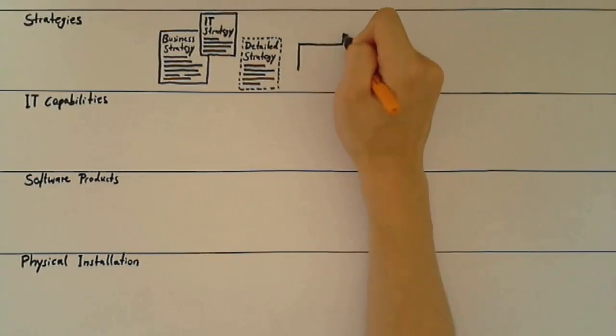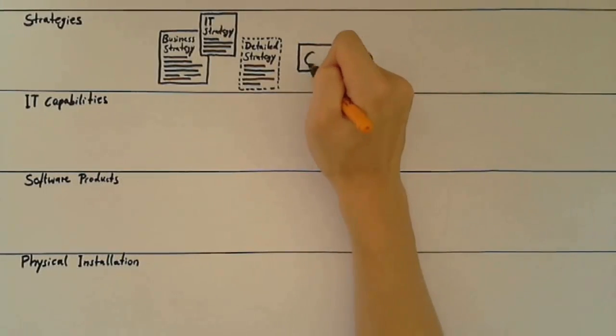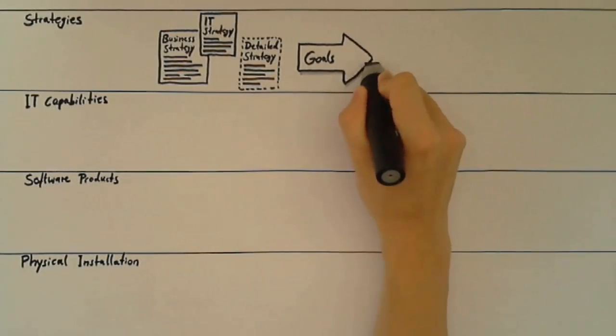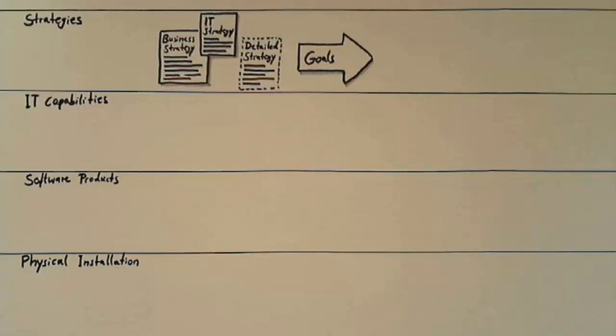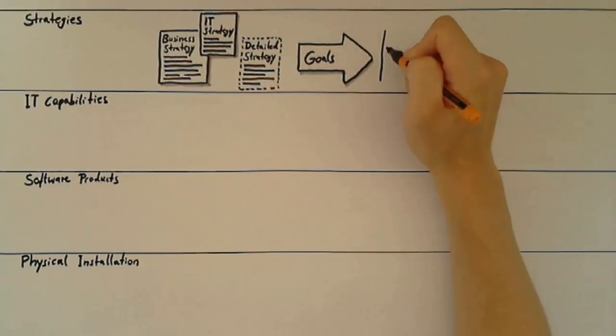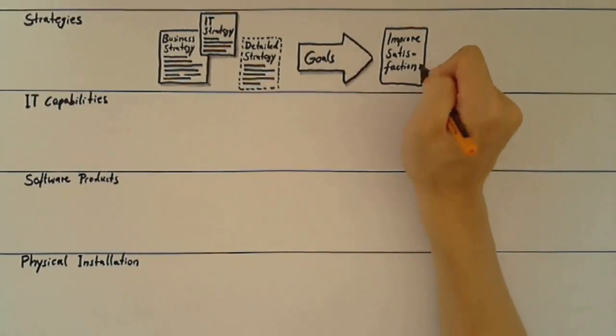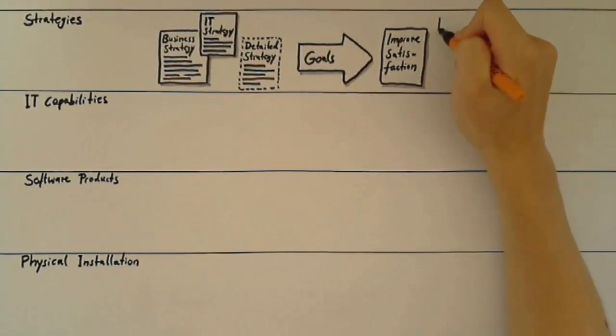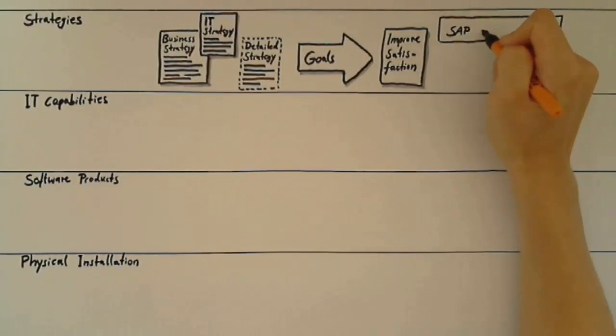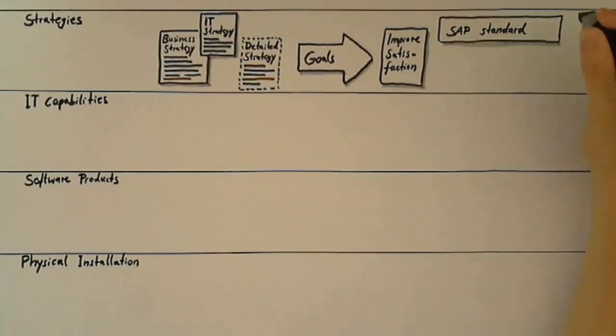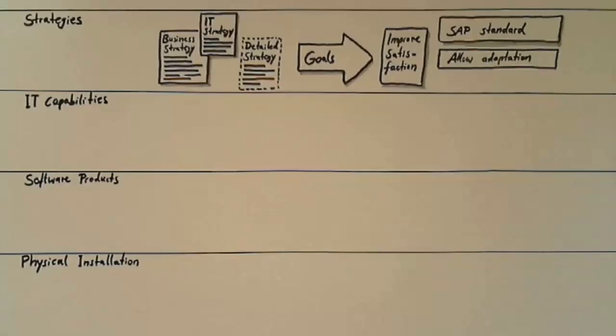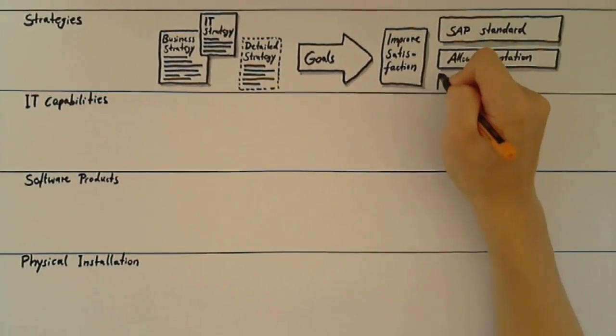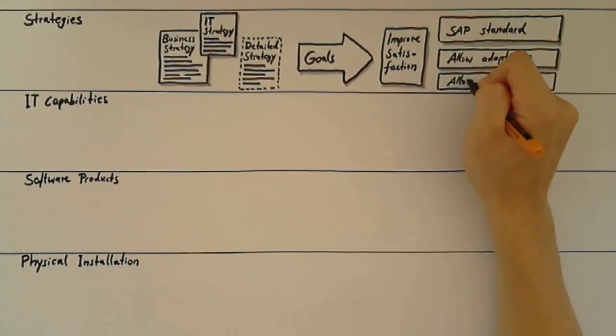It might also include business related goals where necessary to reflect the business needs. As such, this level is for goals that provide concrete guiding principles for IT but aligned with and driven by the business. Examples of goals at the strategic level could be improve user satisfaction, which drives guiding principles such as focus on SAP standard, or allow adaptation of the SAP standard, or allow developments of own applications to extend the SAP standard, depending on your IT preferred strategy.